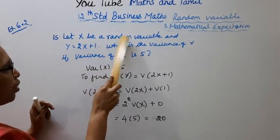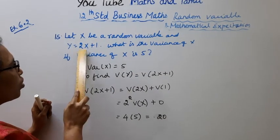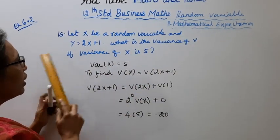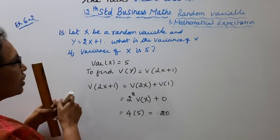Let x be a random variable and y equal to 2x plus 1. What is the variance of y if variance of x is 5?